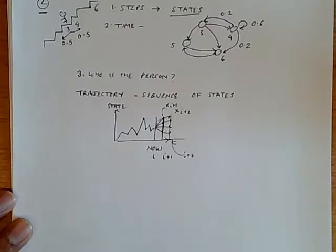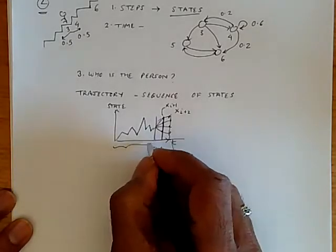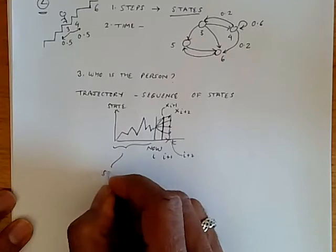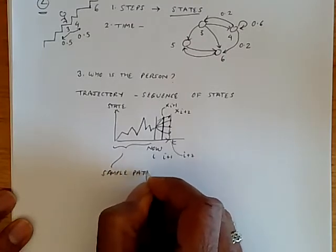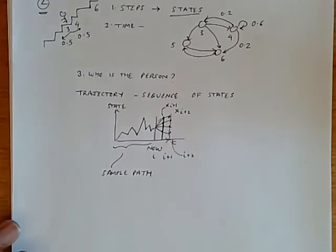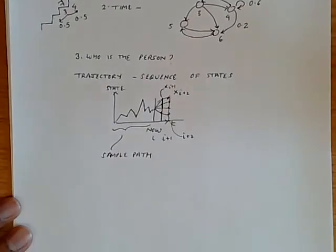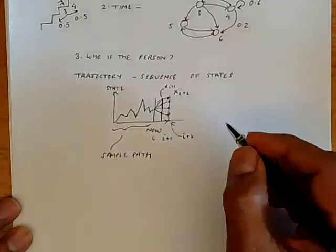So this trajectory of the past, which is known, is also called the sample path. Now, the concept that's quite important here is that the past sample path is known. But if we were to rerun the stochastic process multiple times, then it might assume different sample paths.